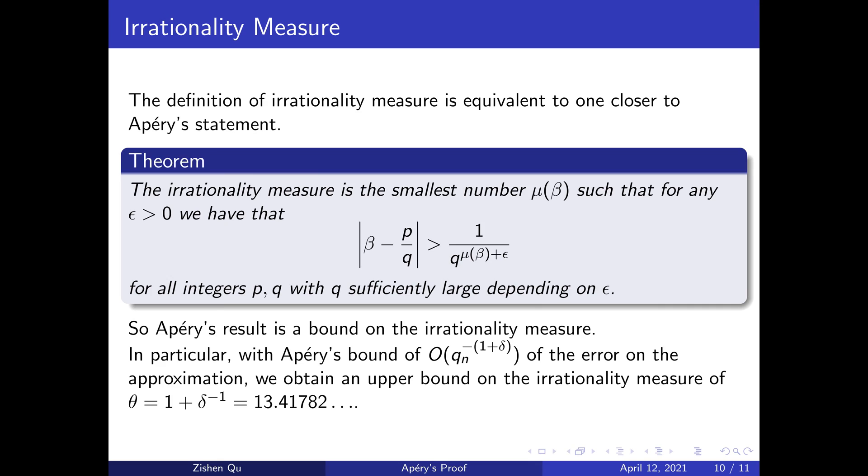With Apéry's bound on the goodness of rational approximations being q_n^{-1-δ} for δ approximately 0.080529 and the denominators of the approximations q_n increasing geometrically, we can obtain that the irrationality measure is bounded by 1 + 1/δ, which is approximately 13.41782.